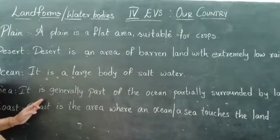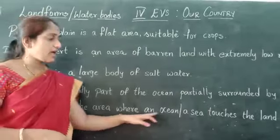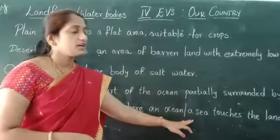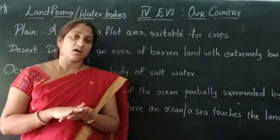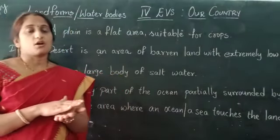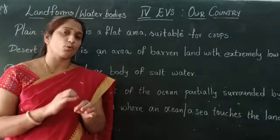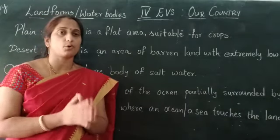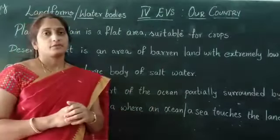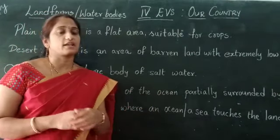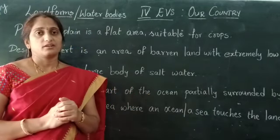Next, coming to coast. A coast is an area where an ocean or a sea touches the land — where some area of land and some area of sea meet at one point. That point is known as a coast. India has a longest coastline of nearly about 14,000 kilometers.